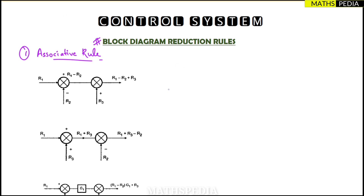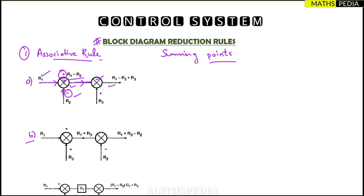In the associative rule, observe the first diagram (A). There are two summing points. Summing points are used when two or more signals are added together. Here, signal R1 is the input, and R2 is added with a minus sign, giving R1 minus R2. This result goes to the next summing point where R3 is added with a plus sign, so the total output is R1 minus R2 plus R3.